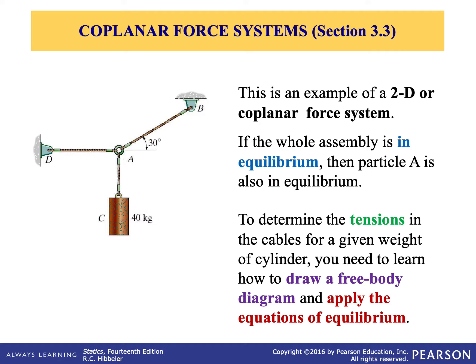This is an example of a two-dimensional coplanar force system, where you have two attachments at point D and point B, and you have a load at point C with 40 kilograms. So, if the whole assembly is in equilibrium — which means it's not moving — particle A, which is in the middle, is also in equilibrium. We need to find the tensions in the cables — from A to B and from A to D — for the given weight of 40 kilograms. We draw the free body diagram first and apply the equations of equilibrium to find those tensions.